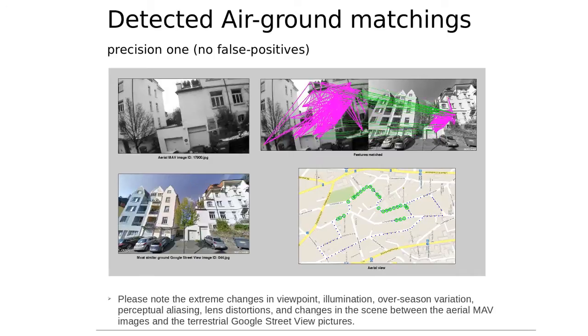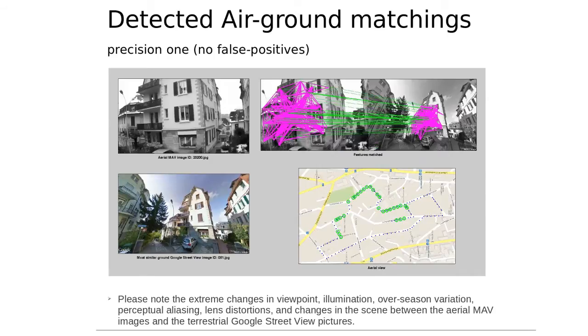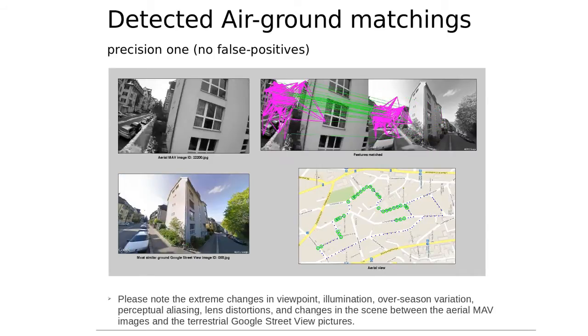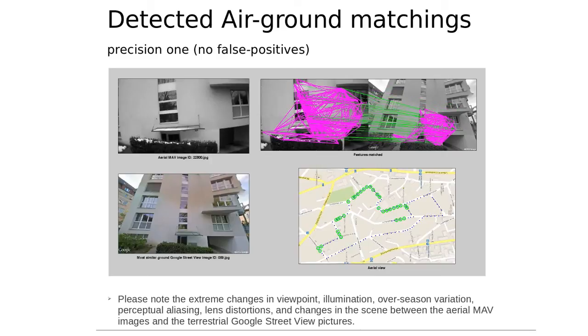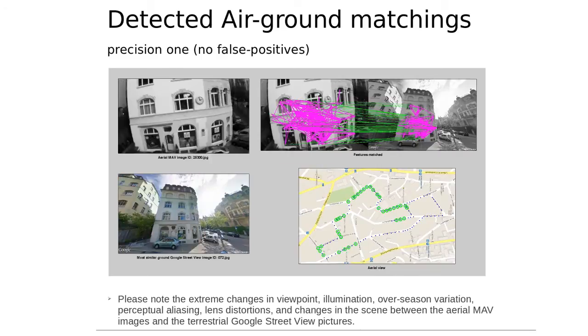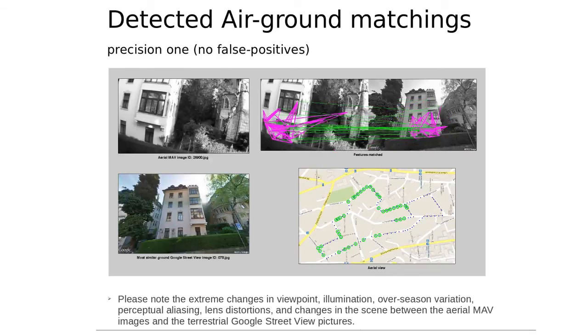Finally, on the top right side in green, we show the connected image feature points detected by our approach. In order to reduce false positive detections, we use a virtual line descriptor marked with magenta.